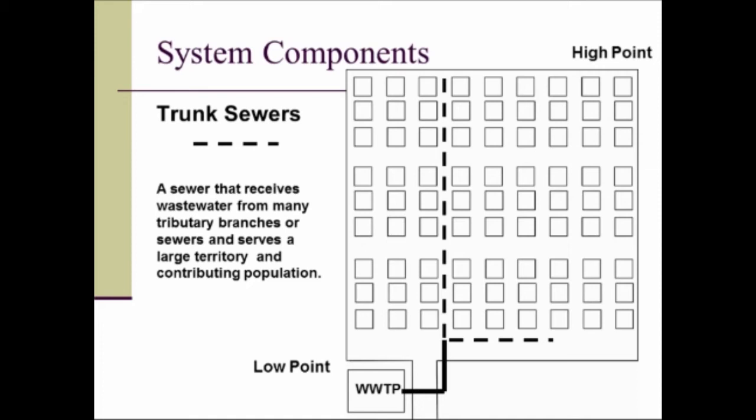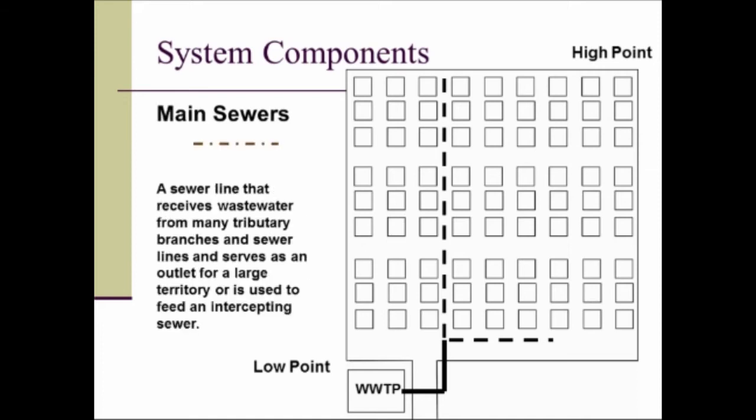Next we're going to look at the main sewers, these brown dashed lines. A main sewer is a sewer line that receives wastewater from many tributary branches and sewer lines and serves as an outlet for a large territory or feeds an intercepting sewer. You can see on the drawing we've got our mains that go into the intercepting sewer but also into the trunk sewers.